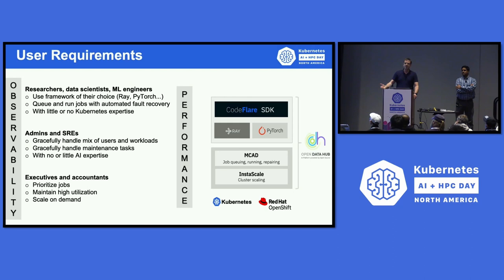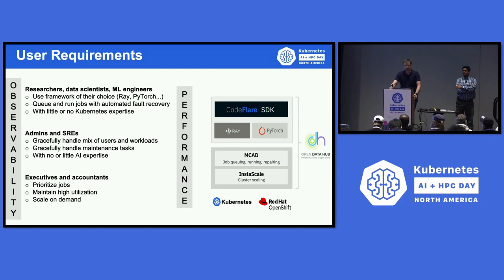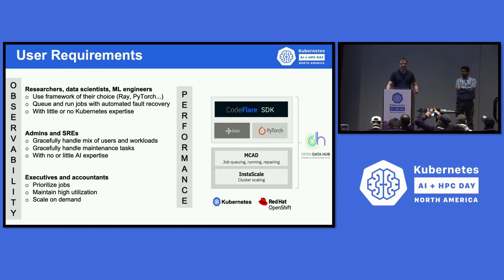The main characteristic of these users is that they are AI experts, not Kubernetes experts — and frankly, they're making a lot more money being AI experts. The second category of users is admins, the people there to keep the system running. They want maximum flexibility and minimum effort, and they live and breathe Kubernetes, so they want to see the system through the Kubernetes lens. Finally, we have executive accountants — people who decide what's important, what runs on what day, what the quotas and priorities are, ensuring the money spent on this system gives a return on investment, that utilization is high and we can scale on demand.